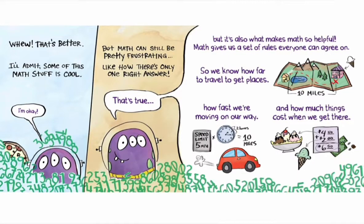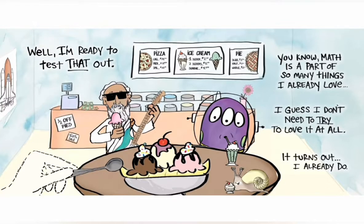I'll admit, some of this math stuff is cool, but math can still be pretty frustrating, like how there's only one right answer. That's true, but it also makes math so helpful. Math gives us a set of rules everyone can agree on, so we know how far to travel to get places. 10 miles. How fast we're moving on our way. Speed limit 5 miles per hour. Two hours equals 10 miles. And how much things cost when we get there. $4.50 plus $2.00 equals $6.50. Well, I'm ready to test that out.